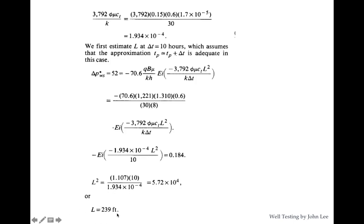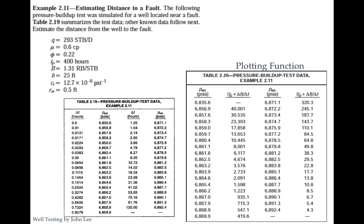Using equation 2.28 with ΔP = 52, the distance l is found to be 239 feet. For a more detailed understanding of the derivation, refer to the book by John Lee. This completes the first case. Now we consider another case: estimating the distance to a fault.